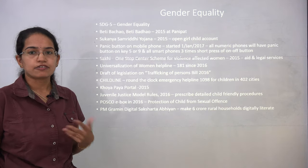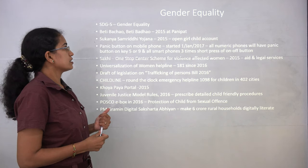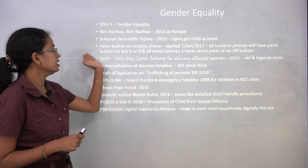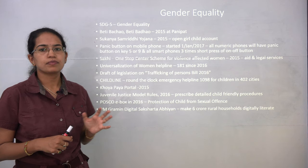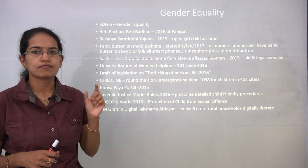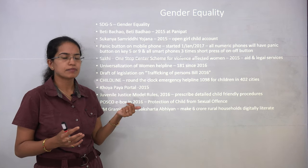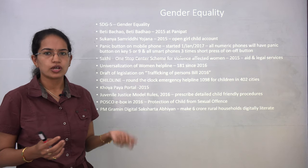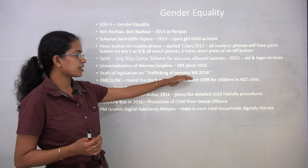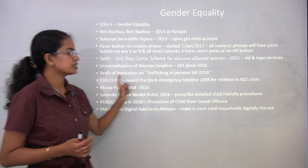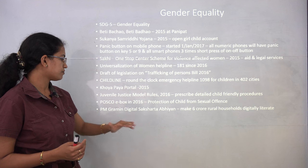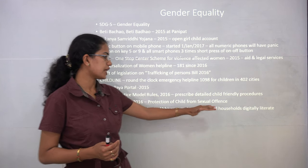For gender equality, Beti Bachao Beti Padhao Abhiyan was released in 2015 in Panipat, Haryana. Sukanya Samriddhi Yojana 2015 aims to open bank accounts for girls. From 2017, all numeric phones will have a panic button on the 5 and 9 keys, and smartphones will use a triple short press of the power button. The universalization of the Women Helpline 181 has been in place since 2016. The Draft Trafficking of Persons Bill 2016, Childline helpline number 1098, Khoya Paya portal for missing persons, and POCSO e-Box 2016 for child protection from sexual offenses have all been introduced.